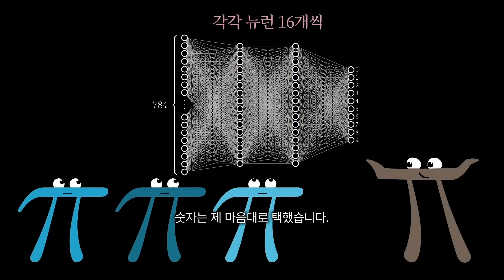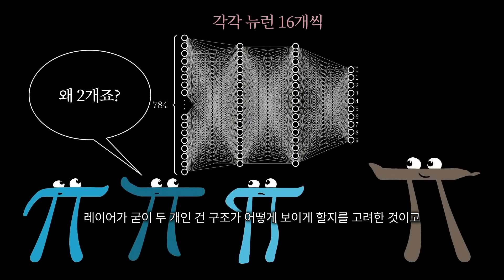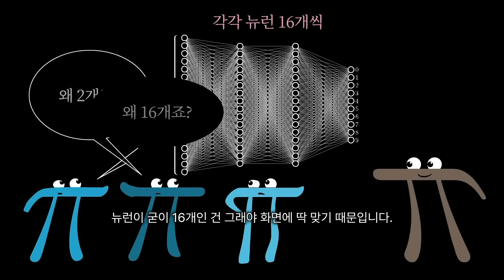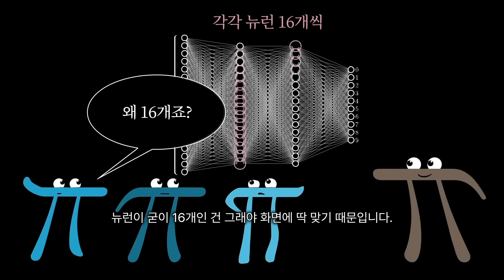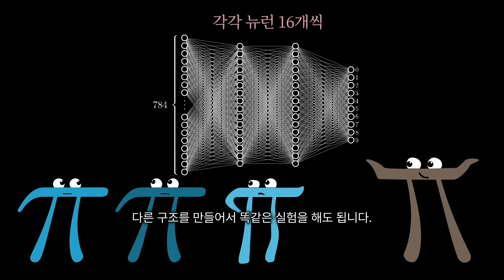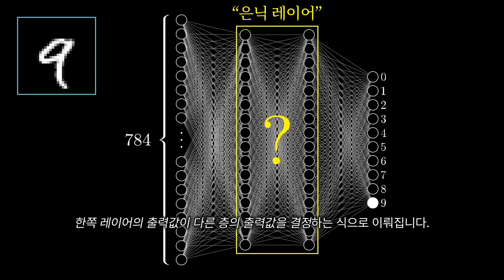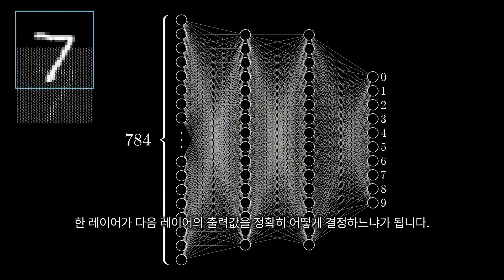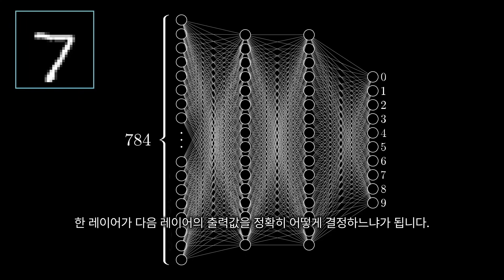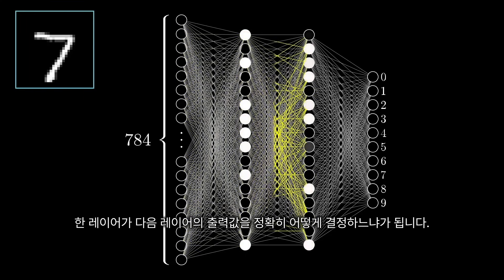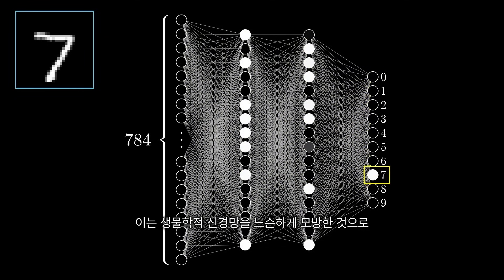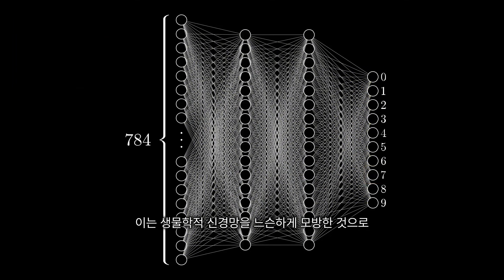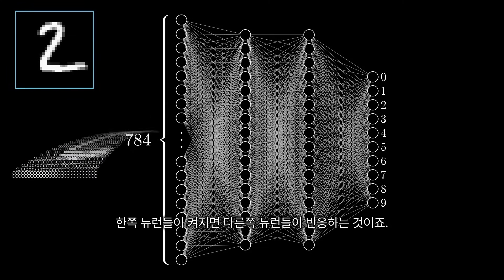And admittedly, that's kind of an arbitrary choice. To be honest, I chose two layers based on how I want to motivate the structure in just a moment. And 16? Well, that was just a nice number to fit on the screen. In practice, there is a lot of room to experiment with the specific structure here. The way the network operates, activations in one layer determine the activations of the next layer. And of course, the heart of the network as an information processing mechanism comes down to exactly how those activations from one layer bring about activations in the next layer. It's meant to be loosely analogous to how in biological networks of neurons, some groups of neurons firing cause certain others to fire.